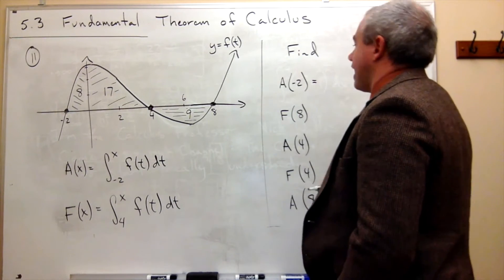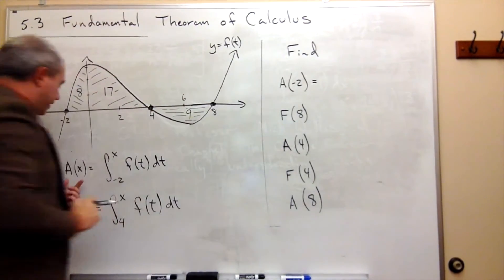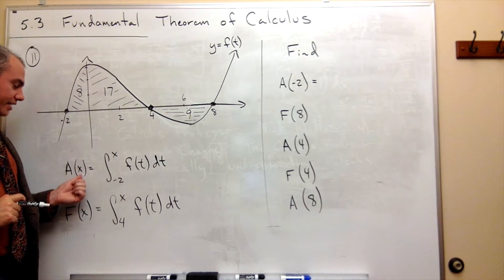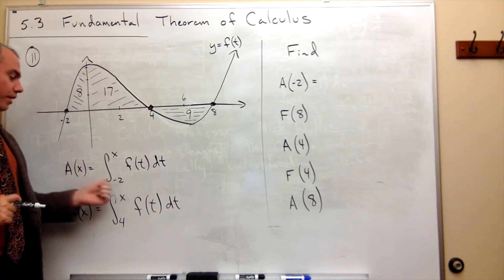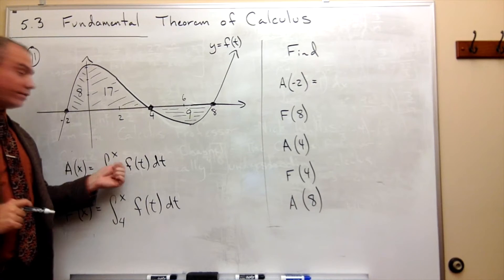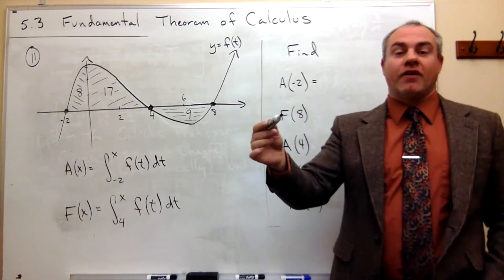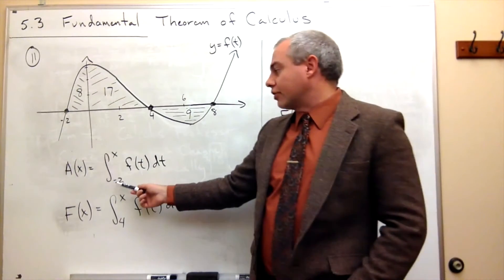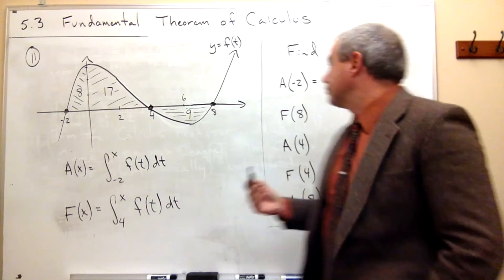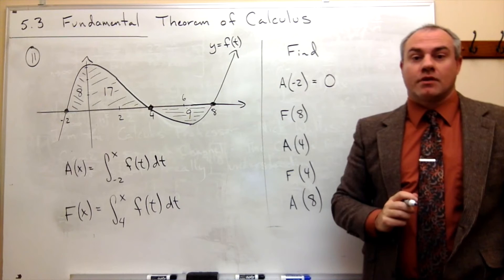So let's start out with A of negative 2. Well, what am I talking about when I say A of negative 2? That means that x, in this case, is negative 2. So I'm integrating from negative 2 to negative 2, because x is negative 2. But if I'm integrating from a point to itself, we know that anytime I integrate from a number to itself, the answer is 0. So A of negative 2 is 0.